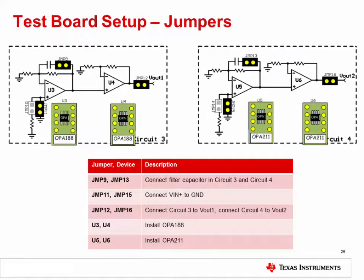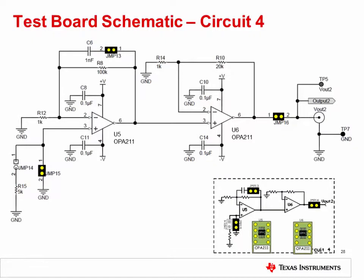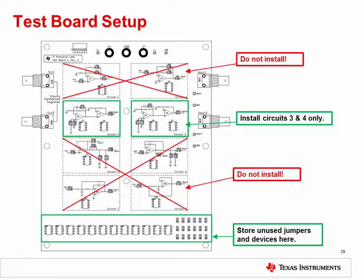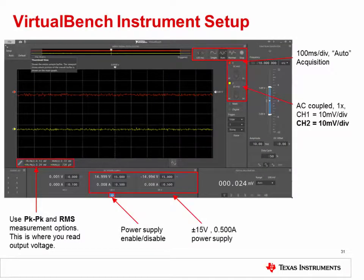The jumper settings on the test board must be modified before rerunning the bench measurement. Simply install jumpers JMP9 and JMP13; all other jumpers and devices remain the same from the previous experiment. The slide shows the full schematic for circuit 3, which you will use to measure the output noise of the OPA188 with the filter capacitor connected, and circuit 4 for the OPA211 with the filter capacitor. The general test board setup and cable connections remain the same for Experiment 2; do not install any devices or jumpers in unused circuits.